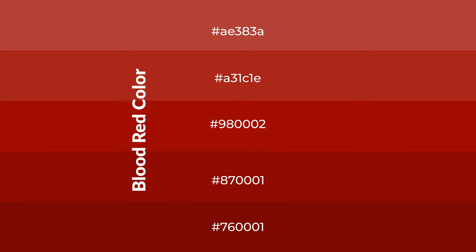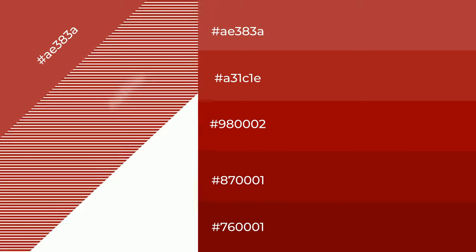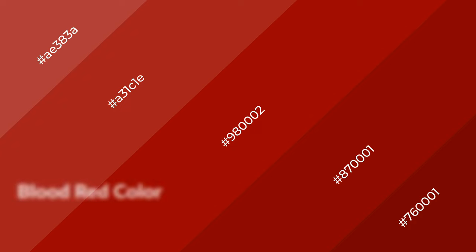To generate shades of a color, we add black to the color, and it is used in patterns, 3D effects, and layers. Shades create depth and drama. Blood red is a warm color and it emits cozier and active emotions.